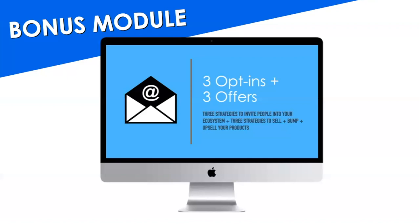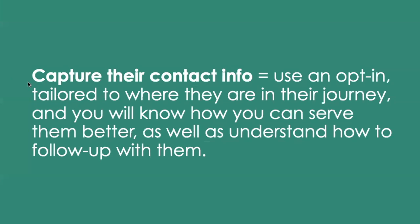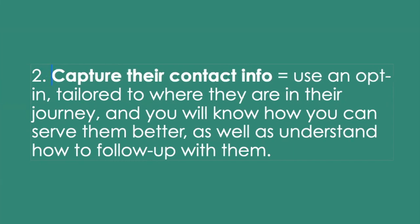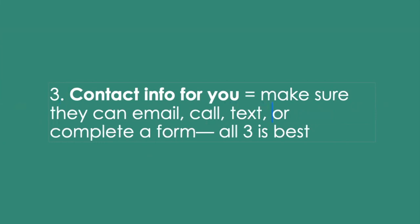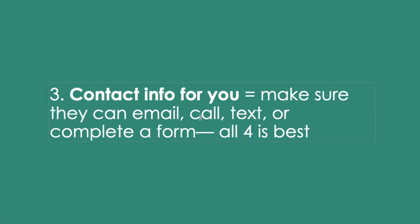So, to recap the things to do. Number one: be clean and concise. Number two: capture their contact information. Number three — surprisingly overlooked — provide contact information for yourself. Make sure they can email, call, or complete a form. You might even allow texting. Let them communicate with you how they want. If somebody calls you, call them back. If they email, email back. If they text, text back. That really gives you information about how you can serve them relationally.